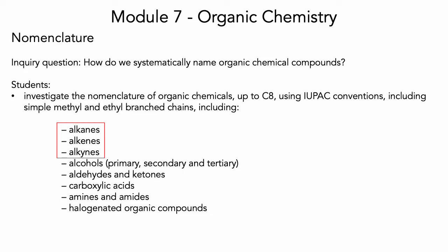Welcome to Module 7, Organic Chemistry. Our first inquiry question is dealing with nomenclature: how do we systematically name organic chemical compounds? The first dot point is to investigate the nomenclature of organic chemicals up to octane C8 using IUPAC conventions, including simple methyl and ethyl branched chains. We're going to start looking at alkanes in this video, then we'll look at alkenes and alkynes.